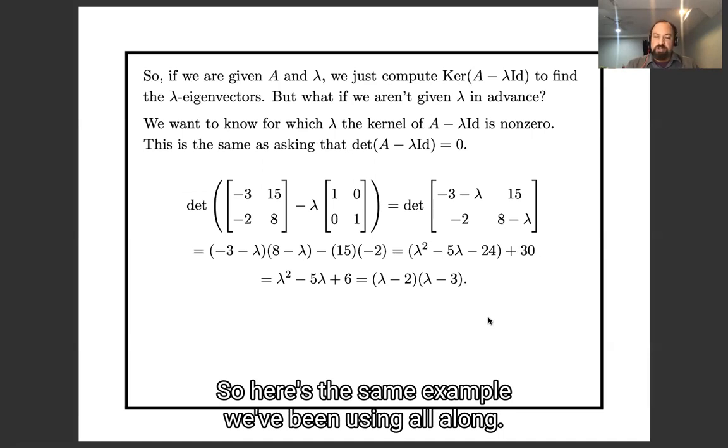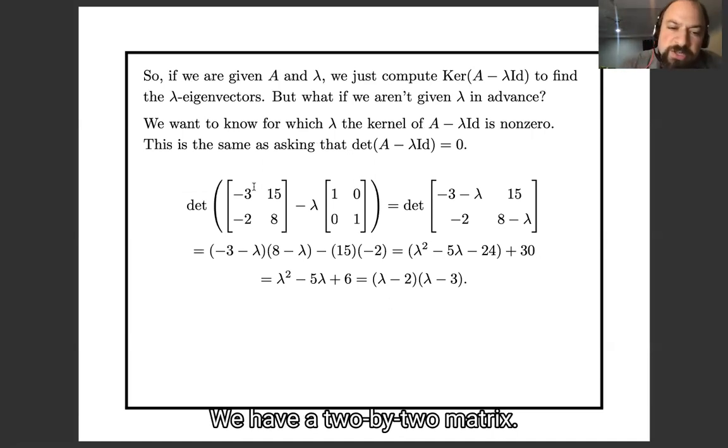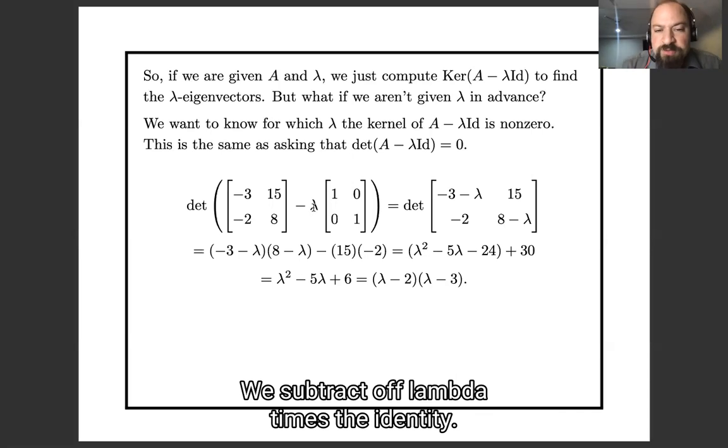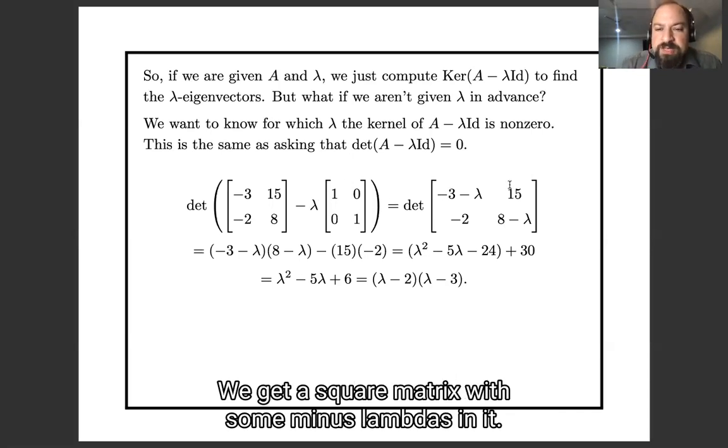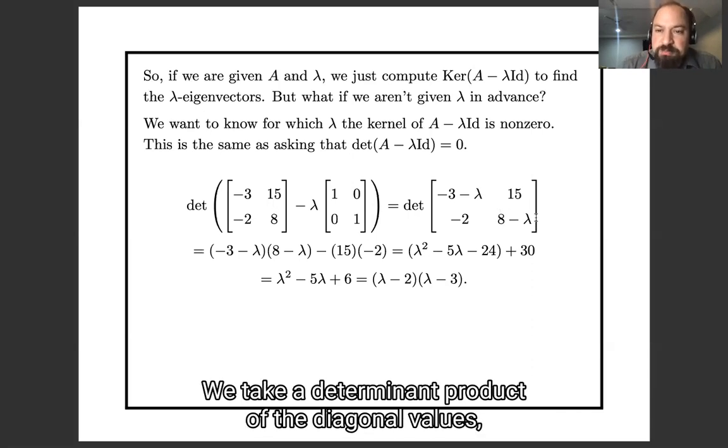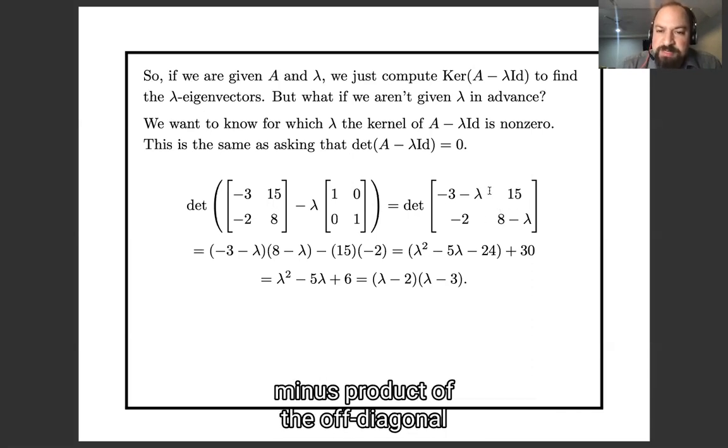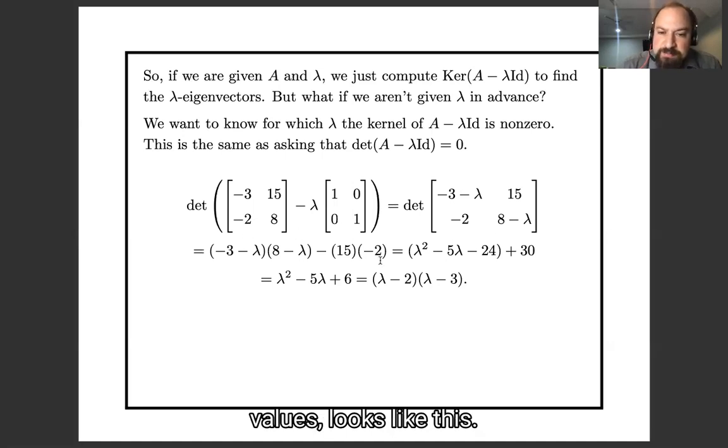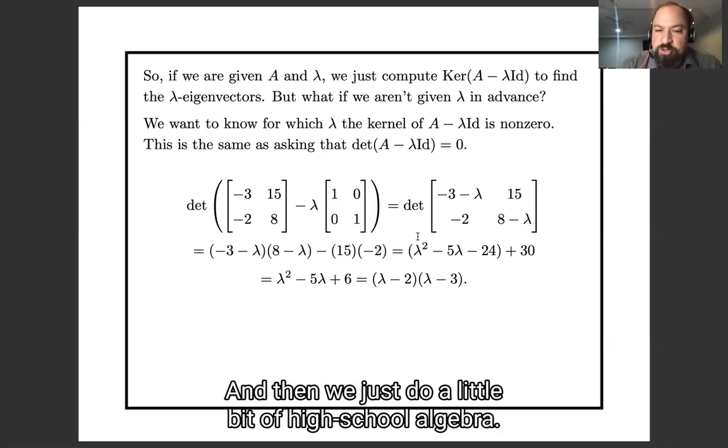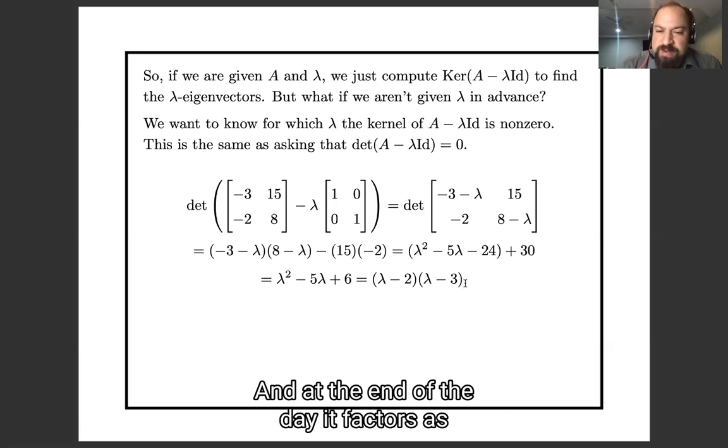So here's the same example we've been using all along. We have a two by two matrix. We subtract off lambda times the identity. We get a square matrix with some minus lambdas in it. We take a determinant, product of the diagonal values minus product of the off-diagonal values, looks like this. And then we just do a little bit of high school algebra, and at the end of the day it factors as lambda minus two, lambda minus three.